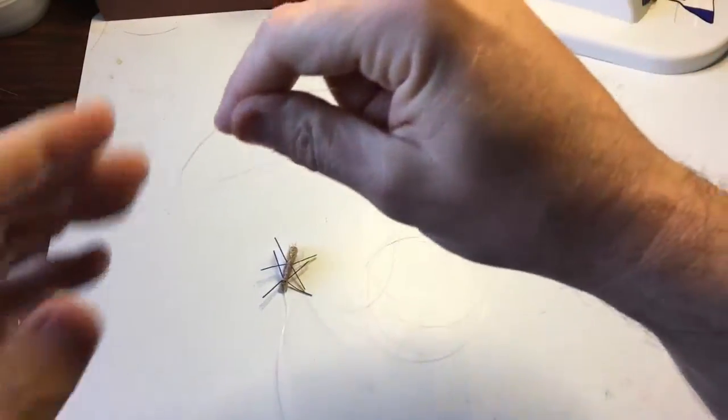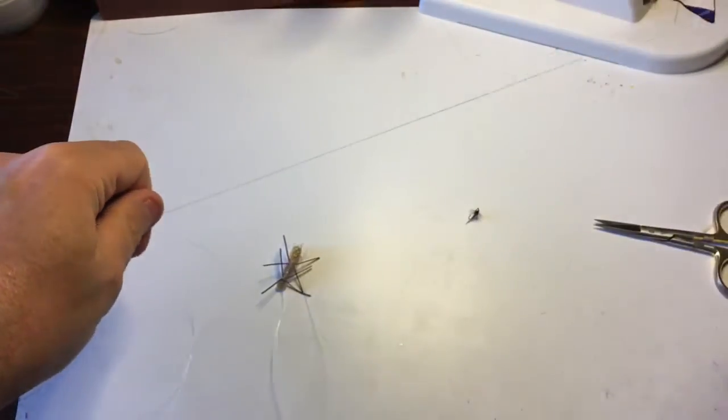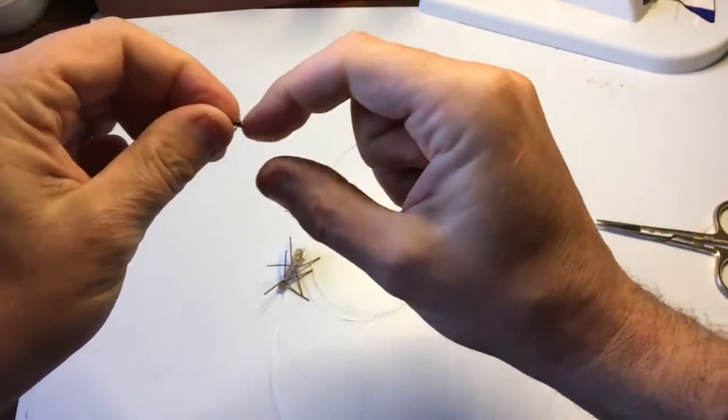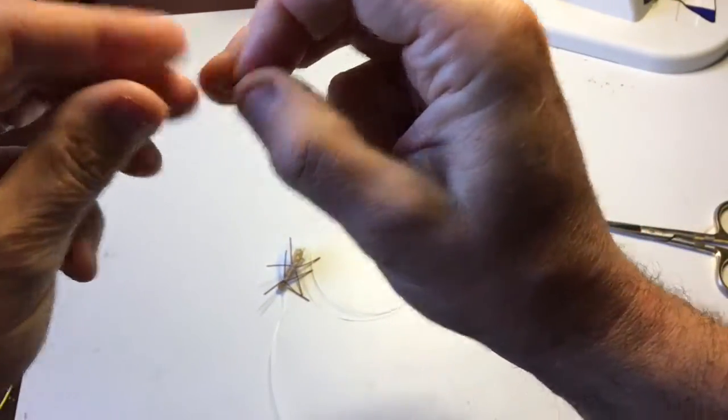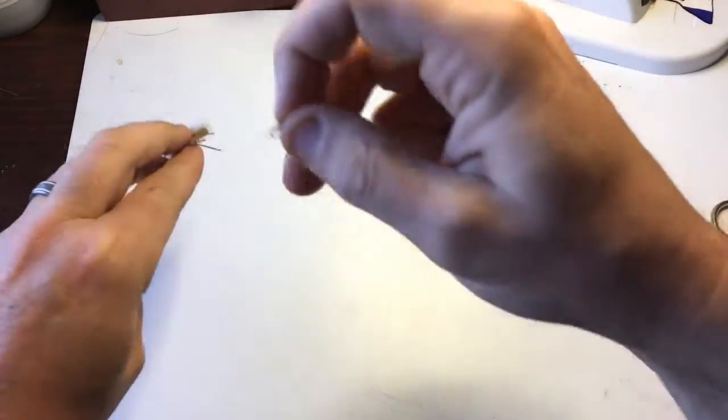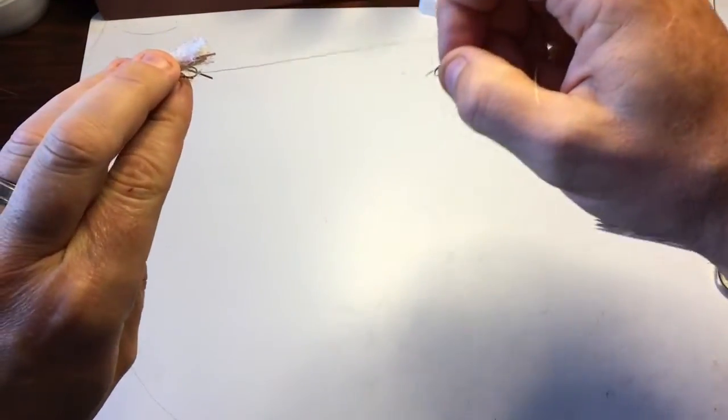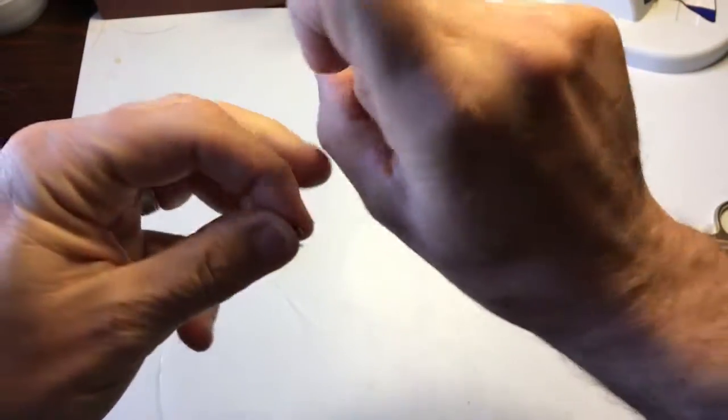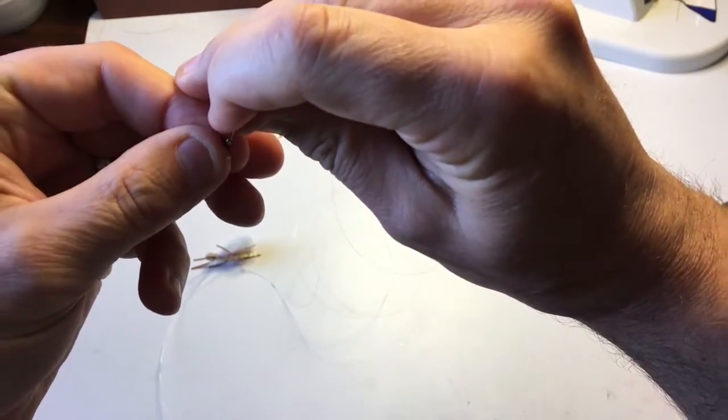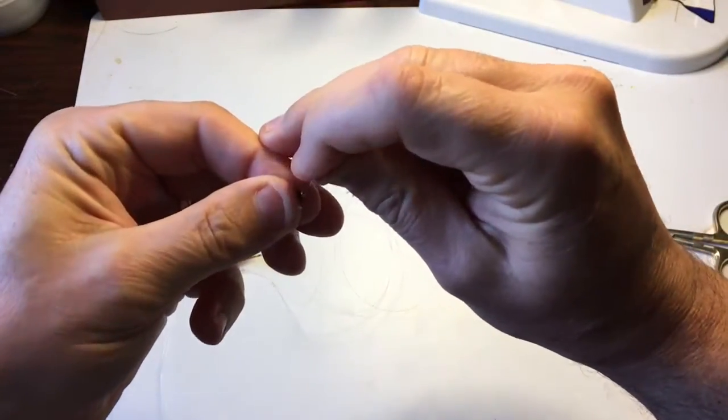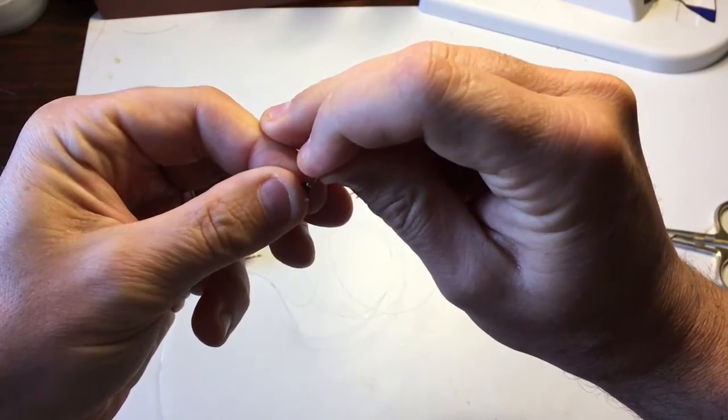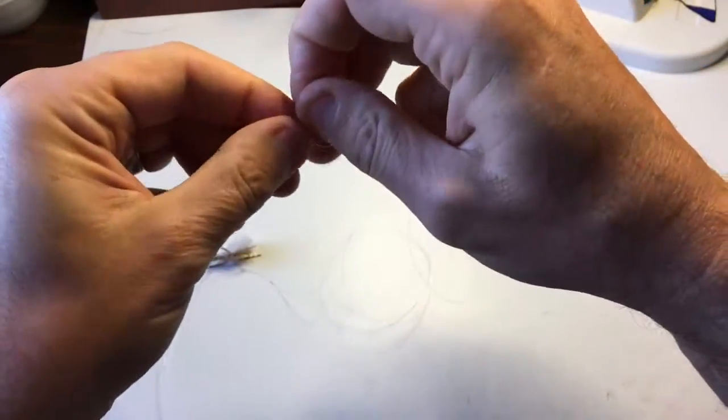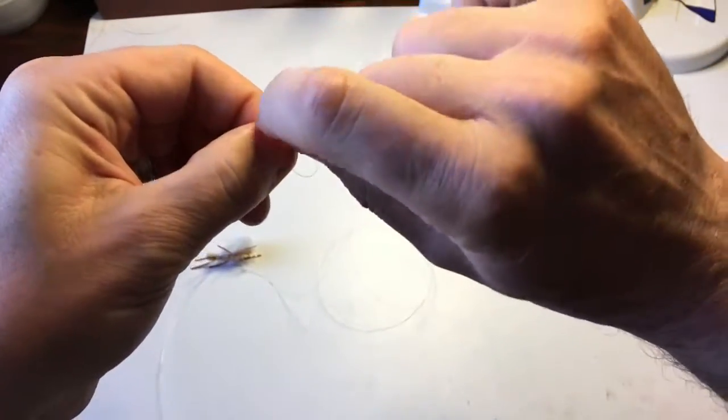Then I'll come to the end of that. And then we'll attach our weighted nymph. Now on this you can also use an unweighted nymph and just have this sitting in the surface film below your dry fly. But I like to use typically a tungsten beaded nymph or one that's weighted on the inside, just so it gets down in the water column a little bit as I'm fishing these things. So I will attach that.